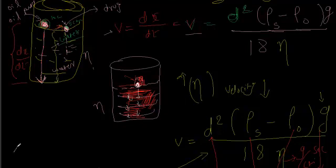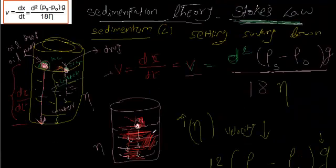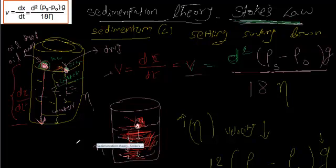In Stokes' law, we assume that all particles are round in structure. But are all particles actually round? We don't think so. We have no idea what the shape of particles could be — for example, if you're making a suspension for a pediatric patient by crushing a tablet, you're not sure that all particles are round in shape. So it's an assumption in Stokes' law that all particles are round in structure.